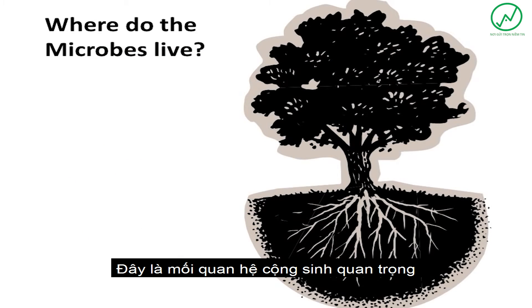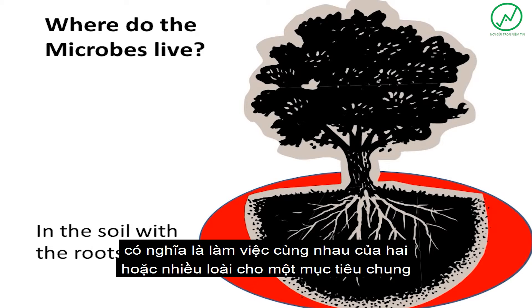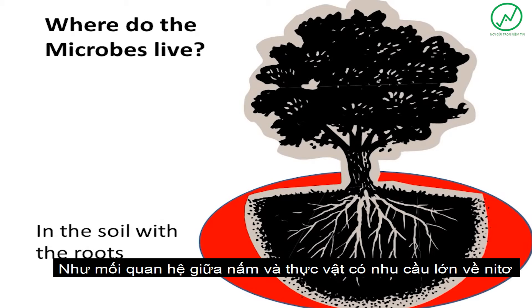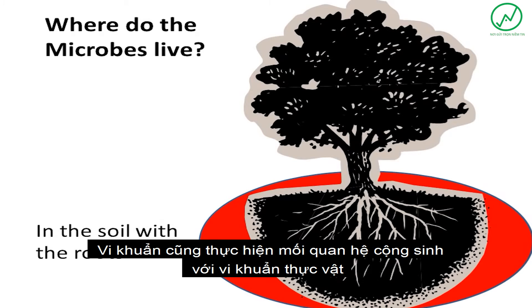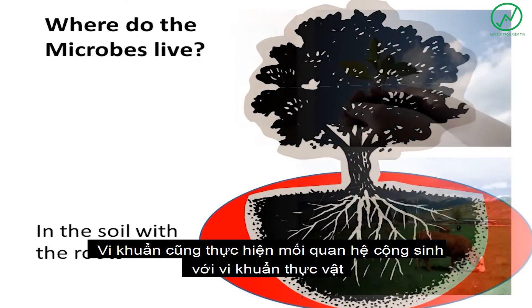Some of these microbes are attached to the root systems of plants. This is a key symbiotic relationship, meaning the working together of two or more species for a common goal, such as the relationship between fungi and the plants with a great need for nitrogen. Bacteria also perform symbiotic relationships with plants.